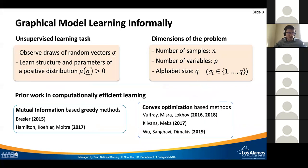Informally, we can pose the graphical model learning problem as follows. We observe n independent samples from this distribution mu sigma, and we want to learn its structure and parameters. Other important dimensions of the problem include the number of variables p. For this talk, I'll explain things for discrete graphical models where each variable can take one of q discrete values, the alphabet size.